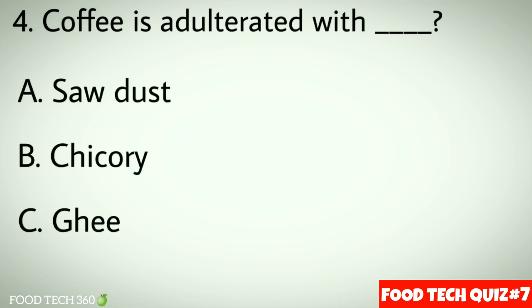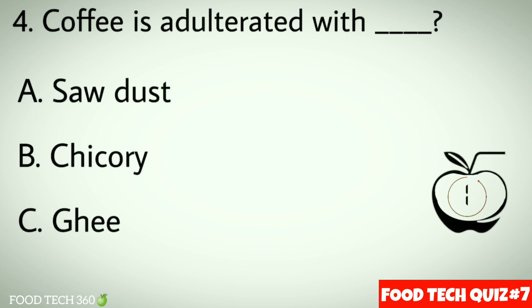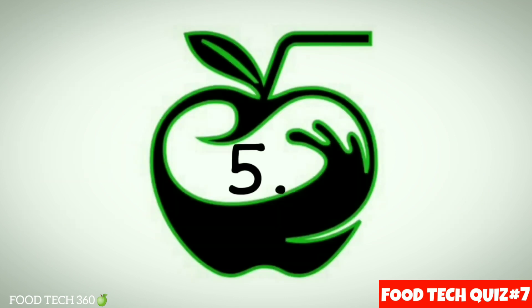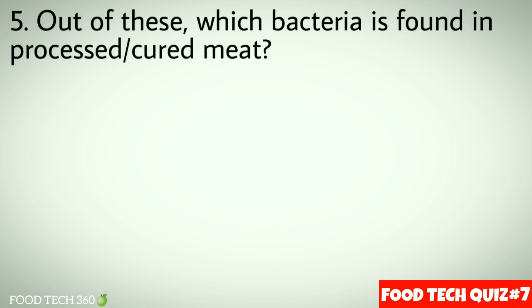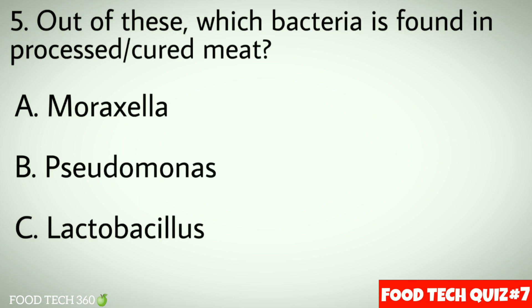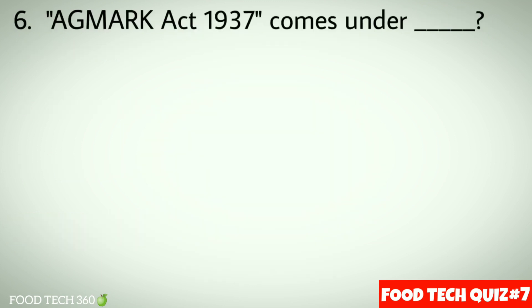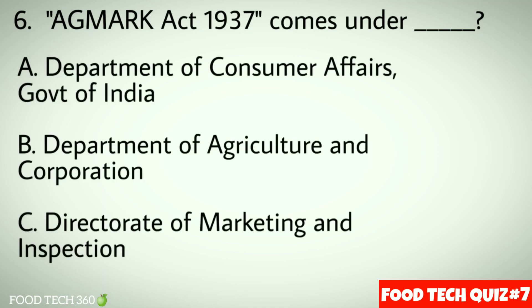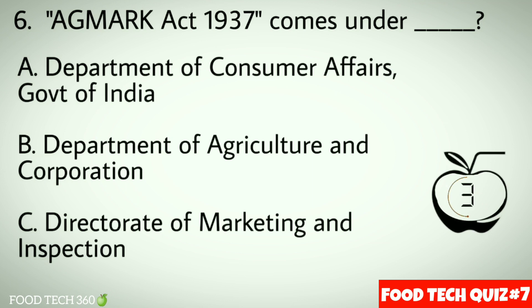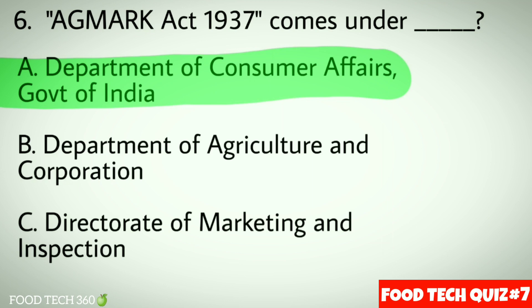Question number 5: Out of these, which bacteria is found in processed or cured meat? Options: a) Moraxella, b) Pseudomonas, c) Lactobacillus. Correct answer: c) Lactobacillus. Question number 6: AGMARK Act 1937 comes under — options: a) Department of Consumer Affairs, Government of India, b) Department of Agriculture and Cooperation, c) Directorate of Marketing and Inspection. Correct answer: a) Department of Consumer Affairs, Government of India.